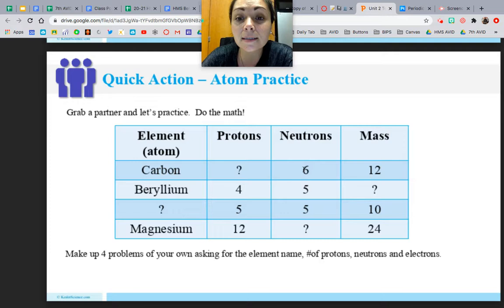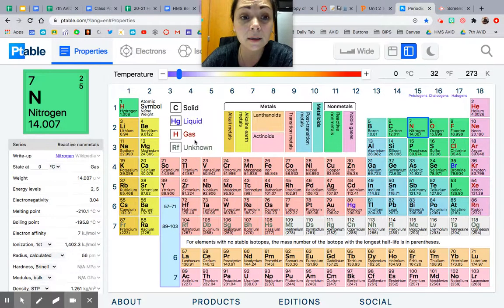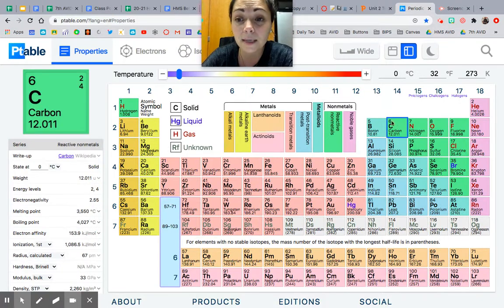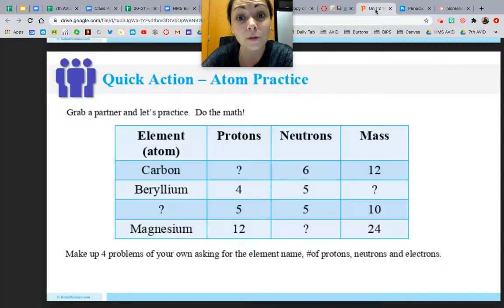So carbon, if it has six neutrons and its mass number is 12, remember this mass number minus the atomic number gives you the number of neutrons. So you can technically take these two numbers and subtract them and it will give you the number of protons. So 12 minus six is six. So carbon's protons is six. And if you want to double check, go to the periodic table of elements and go to carbon and I can see that carbon's atomic number six. So I know that's right because the number of protons is the atomic number.